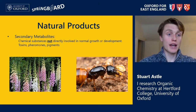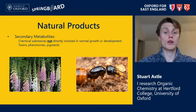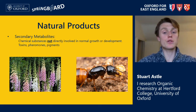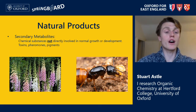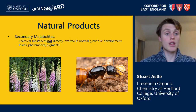Secondary metabolites, on the other hand, are classed as chemical substances not directly involved in the normal growth or development of an organism, but which still convey upon it some evolutionary advantage, enabling it to survive and reproduce. Examples of these secondary metabolites are toxins, pheromones, and pigments.